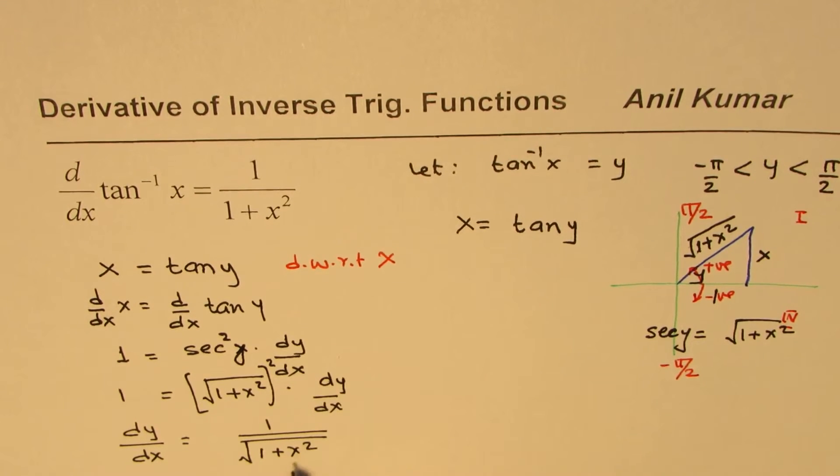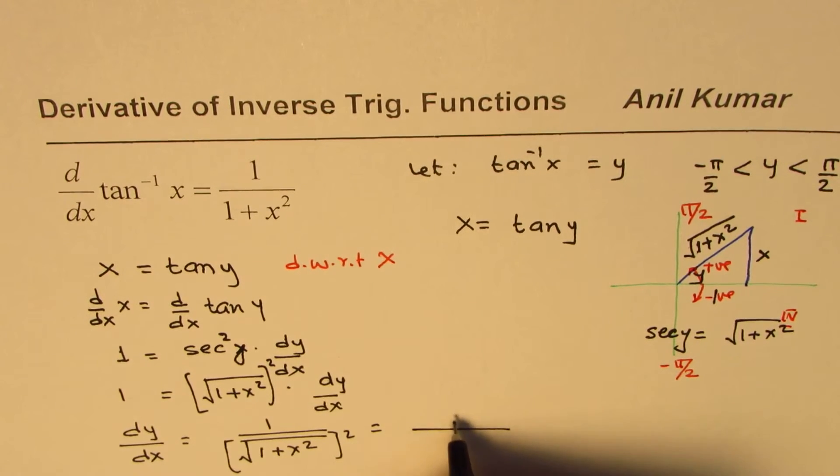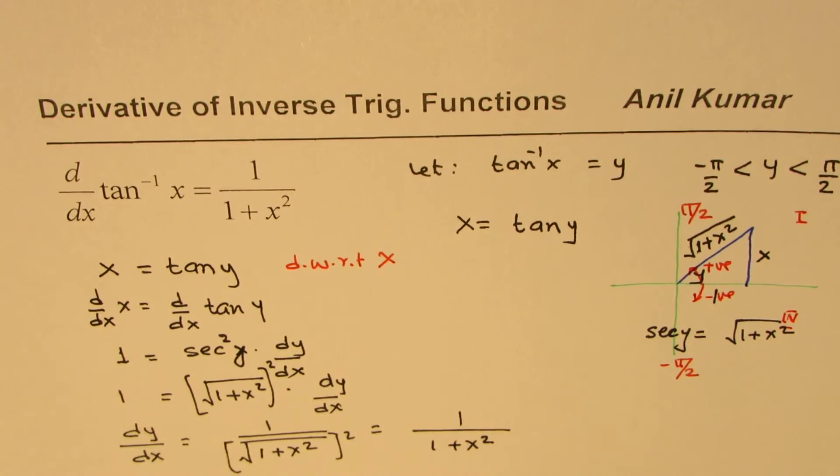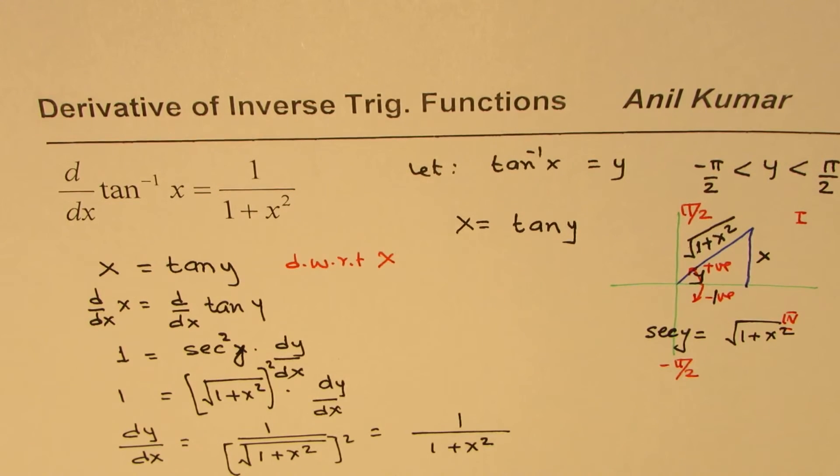So that gives you 1 over 1 plus x square. So dy/dx is 1 over 1 plus x square, as expected.